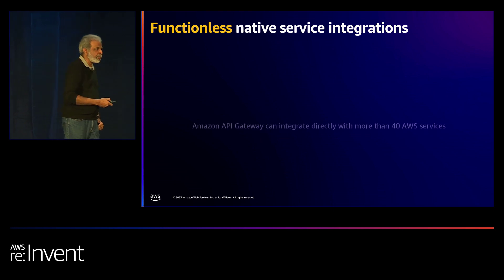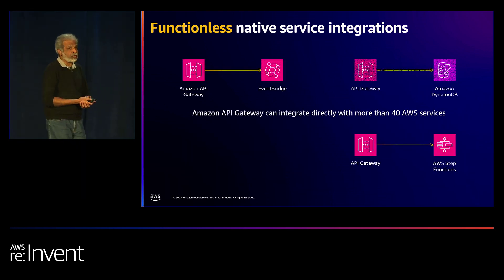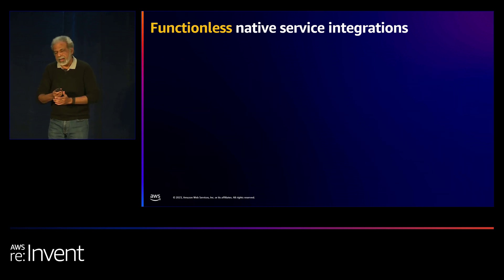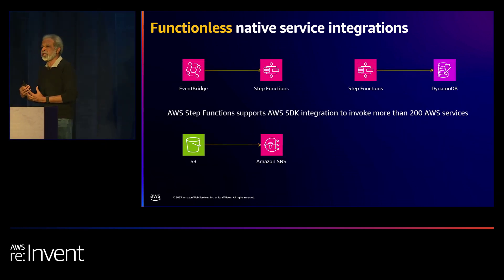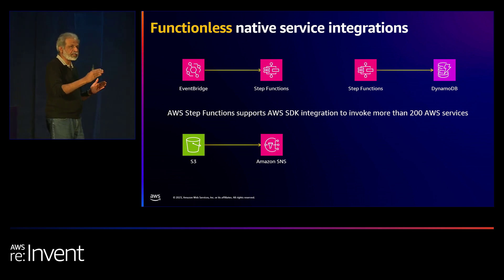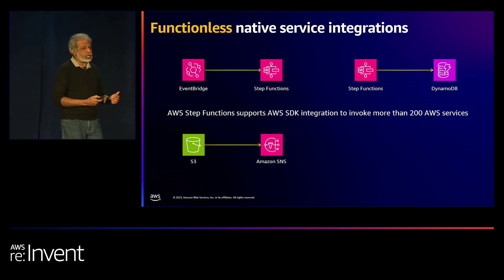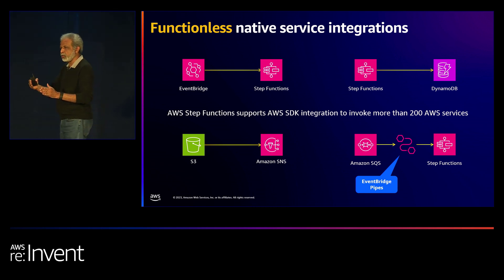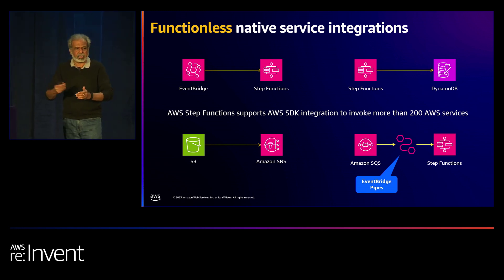API Gateway supports over 40 integrations to several AWS services. Step Functions provides many opportunities, especially with SDK integration, to interact directly with services without needing to write Lambda functions. And at last year's re:Invent, EventBridge Pipes was announced — a one-to-one pipeline where you can do transformation and connect with target services, in most cases without writing a Lambda function.